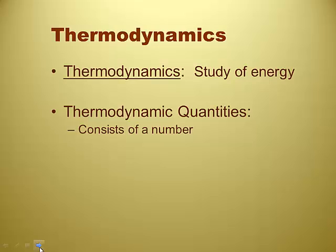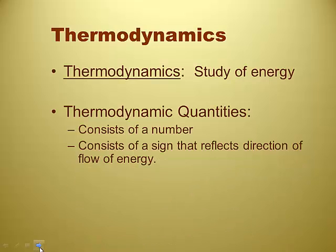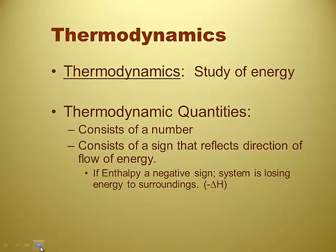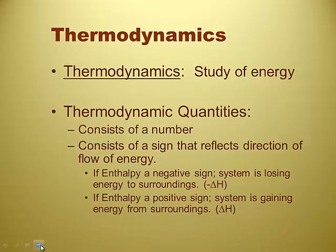Thermodynamic quantities consist of a number and a sign that reflects the direction of the flow of the energy. We've talked about this already, right? And so just as a review, if the sign is negative, that means that the system is losing energy to the surroundings. And if the sign is positive, that means that the system is gaining energy from the surroundings.